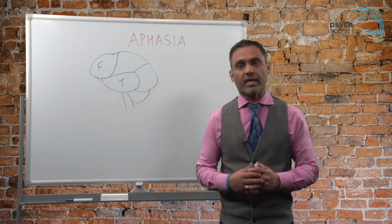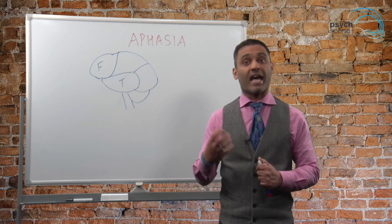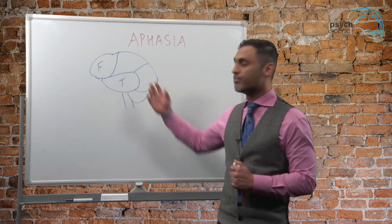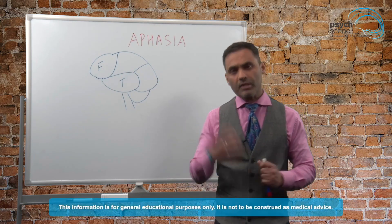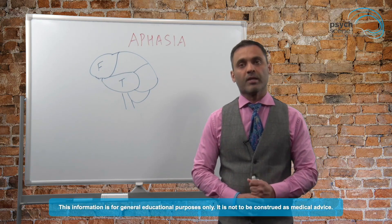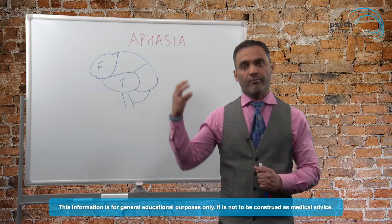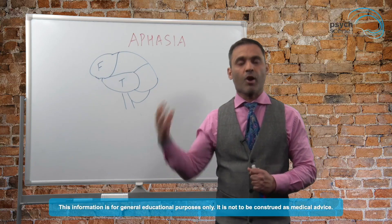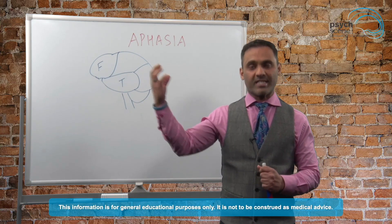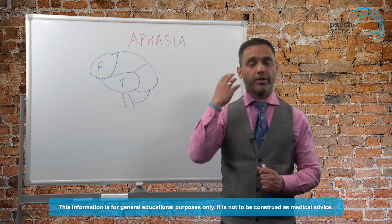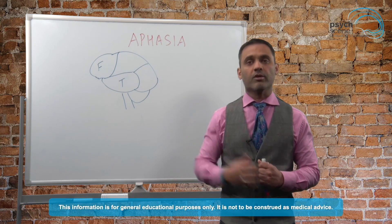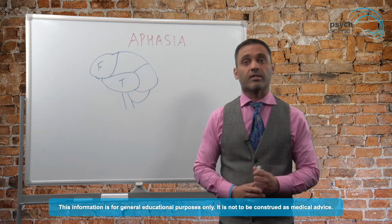Aphasia is essentially a speech and language impairment because certain parts of the brain are affected. Let me take you through the speech pathways. When we first hear something, we take in those words through the ear, and conveniently situated just above the ear is the temporal lobe.